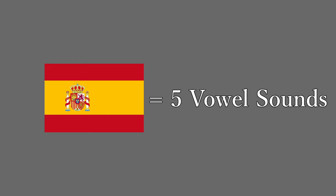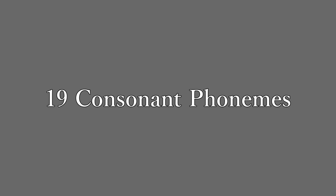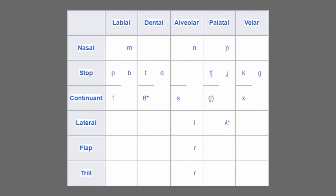In Castilian Spanish, there are five vowel sounds — A, E, I, O, and U — and 19 consonant phonemes, although this number can lower to 17 depending on the dialect. Starting from top to bottom, we have our labial sounds: M, P, B, and F. Now we have our dental sounds: T, D. Our alveolar sounds: N, S, L, R, and the trilled R. Our palatal sounds: Ñ, Y, CH, and SH. Our velar sounds: K, G, and the velar CH.